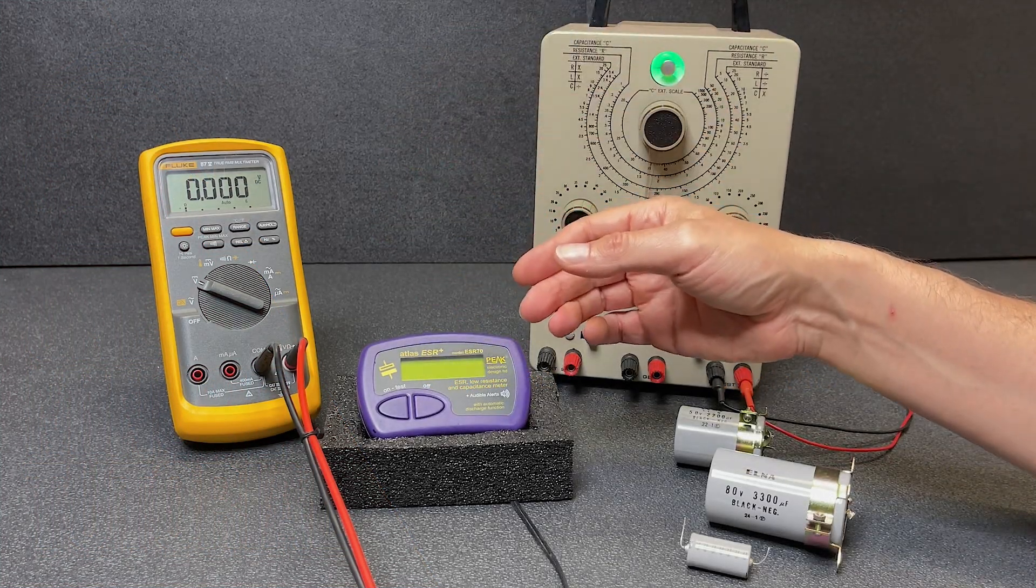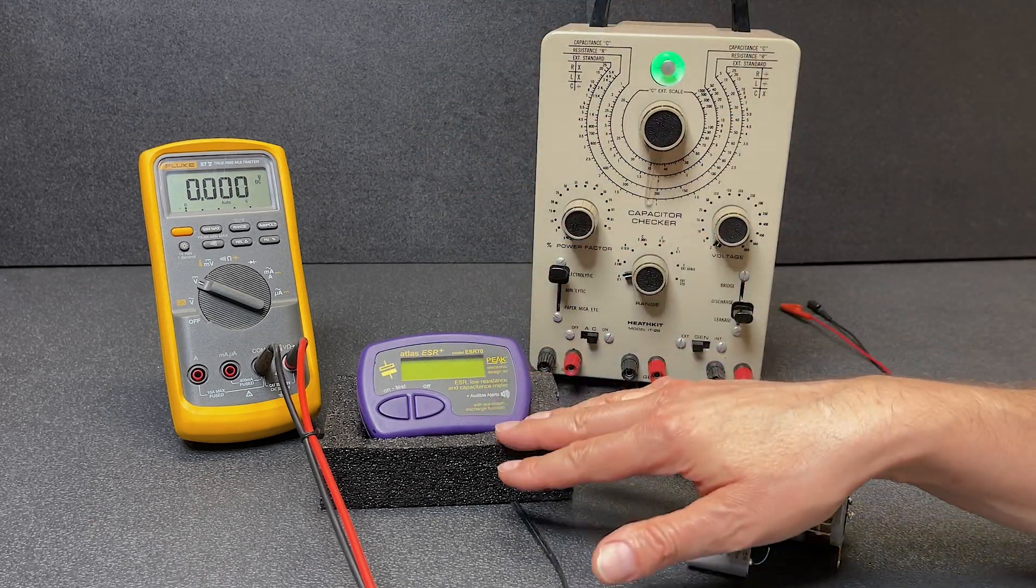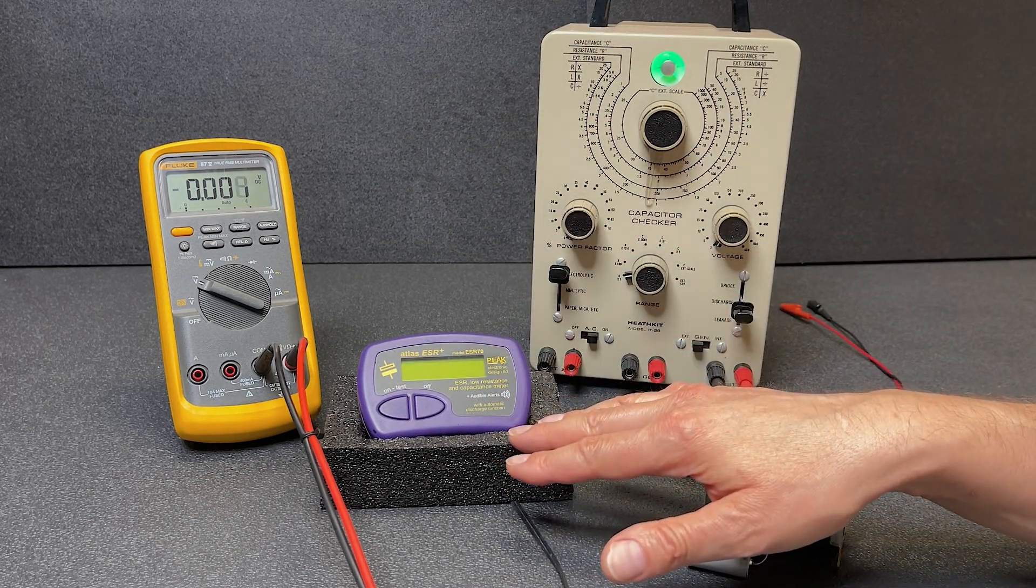We'll use the multimeter to make sure the capacitors are discharged. This is especially important before hooking this up to the ESR meter, which can't tolerate much voltage on the capacitors.